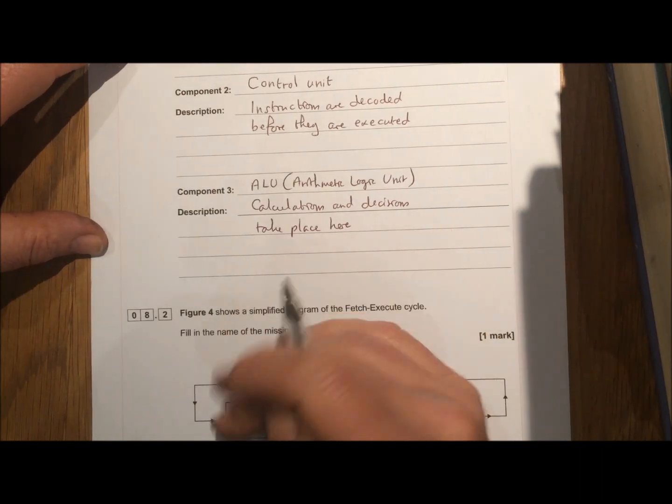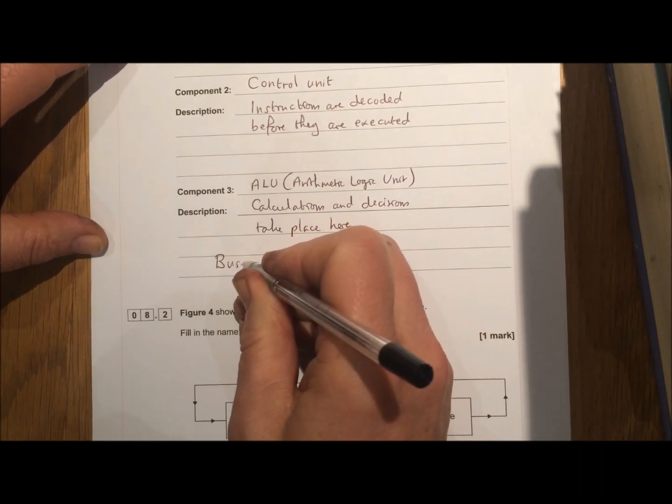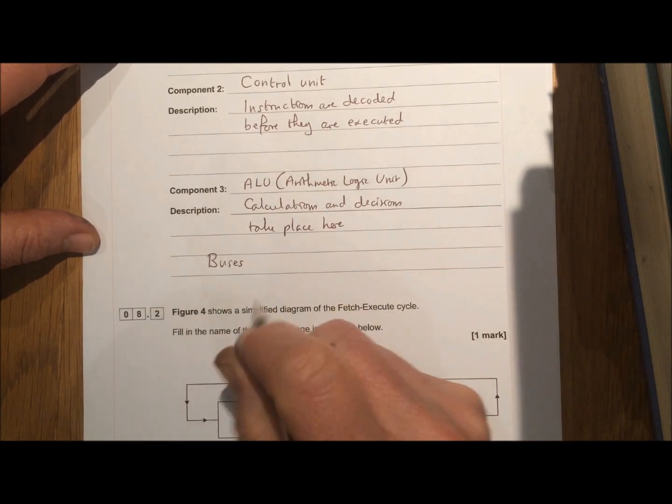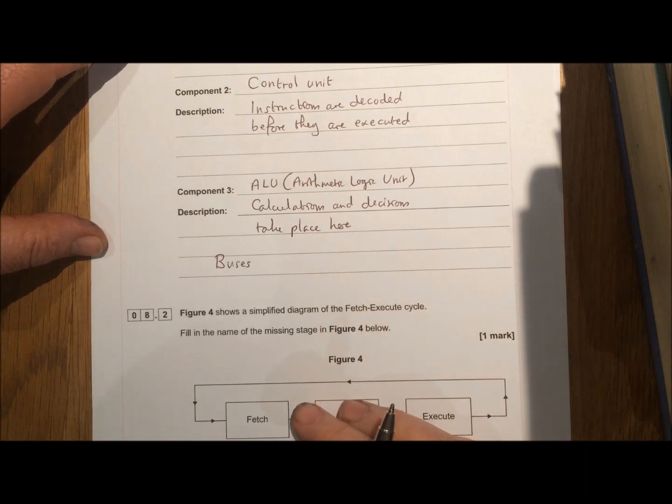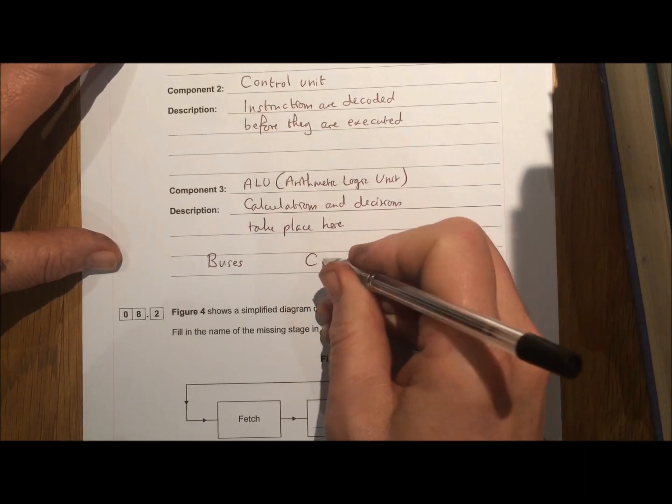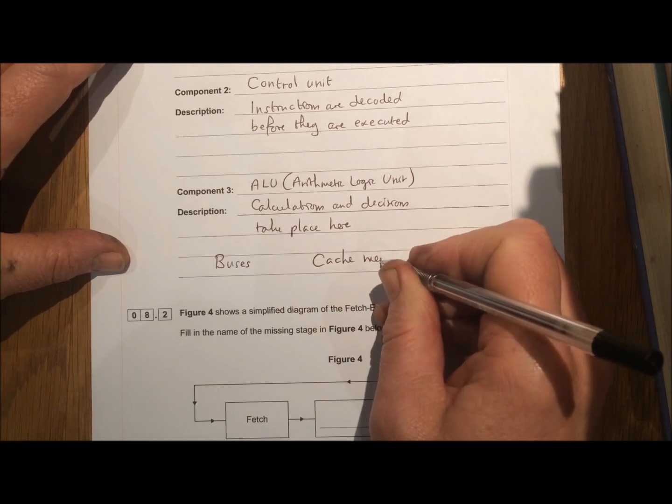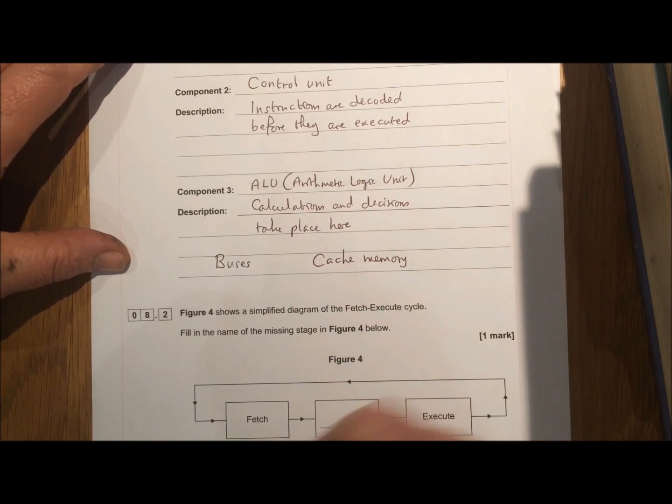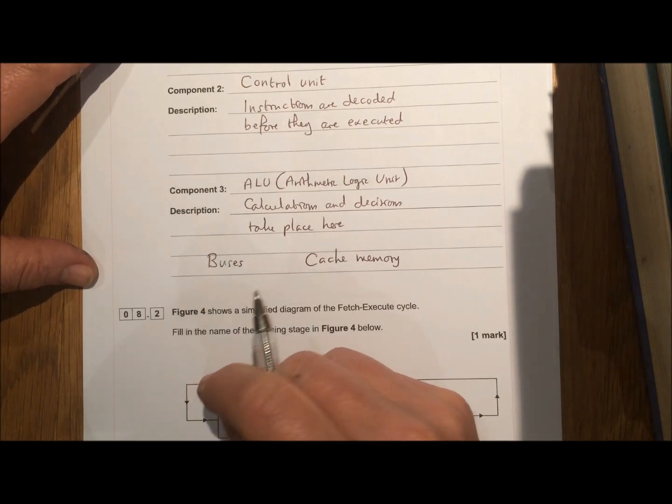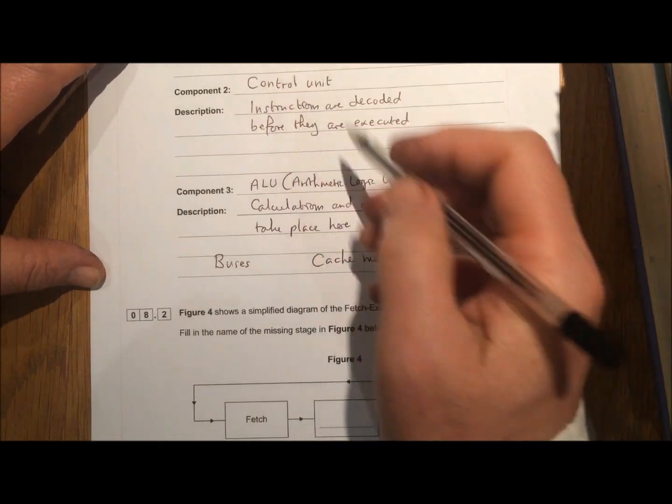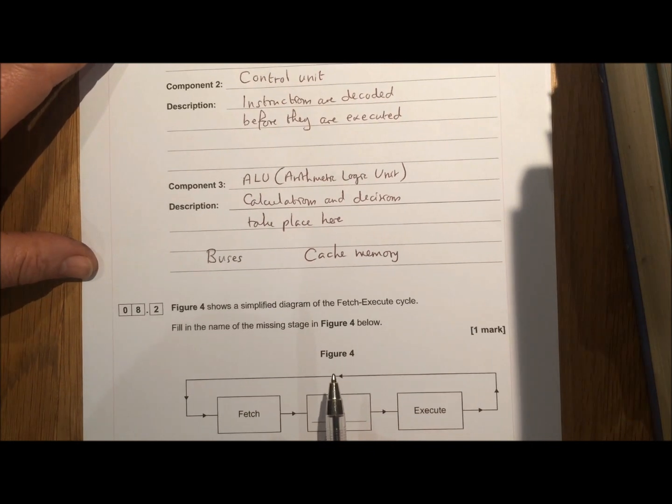Other parts you could mention. You could mention buses, which are the cables or the wires that carry instructions and data around the CPU. You could mention cache memory, which is the small amount of very high speed memory that's attached to the CPU or is very close to it. So any one of those five things there mentioned and a description of each one gets you six marks.